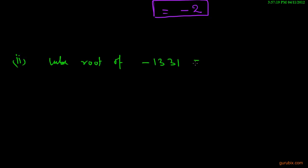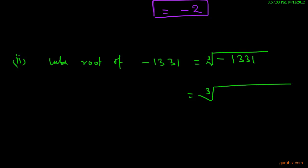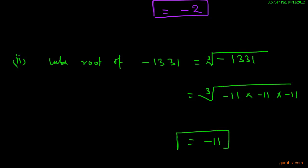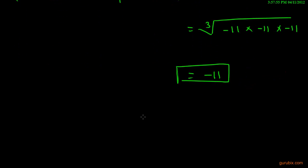Now we shall calculate the cube root of negative one thousand three hundred and thirty one. We can write one thousand three hundred and thirty one as minus eleven times minus eleven times minus eleven, and taking one factor out of this triple gives us negative eleven. So the cube root of negative one thousand three hundred and thirty one is negative eleven. This is how we can find the cube root of a negative integral perfect cube. Thank you.